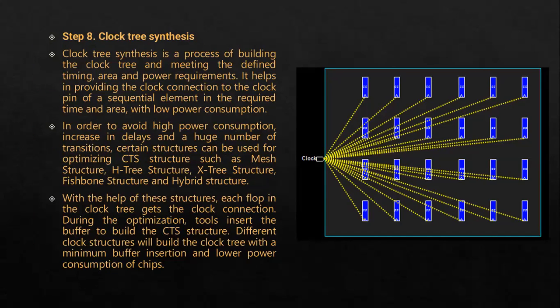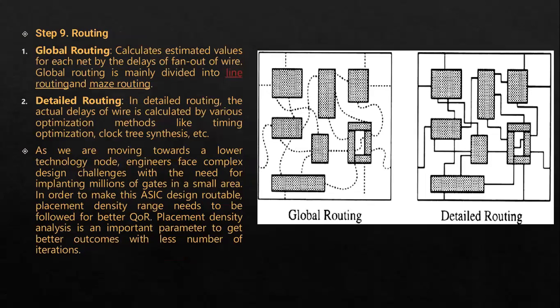Routing is of two types: global routing and detailed routing. Routing is basically the interconnection of several modules within the chip. Global routing estimates values such as fan-out of the wire by simplifying normal connections between them. This is not the final routing, but then it is sent for detailed routing.